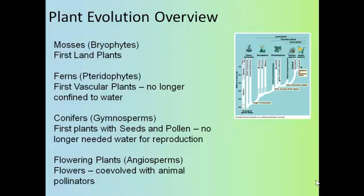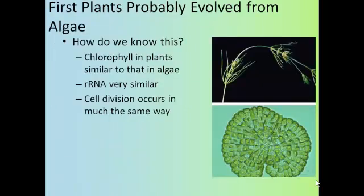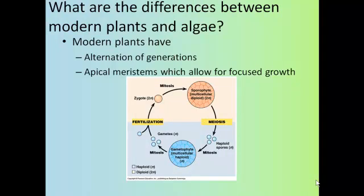We think the first plants probably evolved from algae. The evidence: the chlorophyll found in modern plants is very similar in structure to that found in algae; the ribosomal RNA genes are extremely similar; and cell division occurs in much the same way. Modern plants differ from algae in two important ways: modern plants have alternation of generations — the alternation between the gametophyte and sporophyte generation — and modern plants also have apical meristems, areas of concentrated cell growth found on the tips of the roots and shoots, which you don't see in algae.